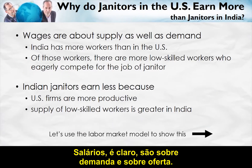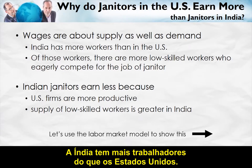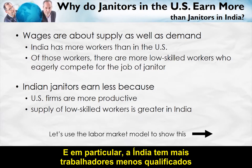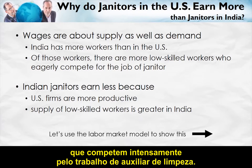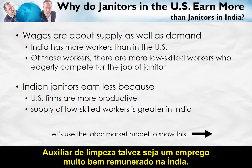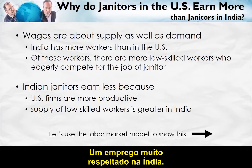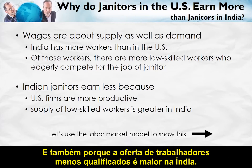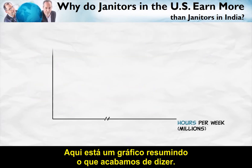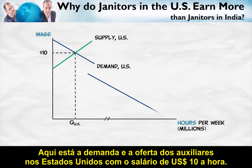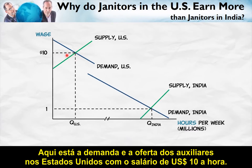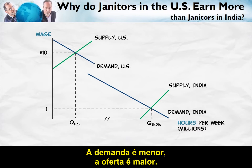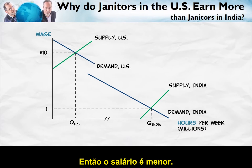Wages are about both demand and supply. India has more workers than the United States, and in particular, India has more low-skilled workers who eagerly compete for the job of janitor — a janitor could actually be a quite high-paying, well-respected job in India. So Indian janitors earn less because U.S. firms are more productive (demand for labor is higher) and because the supply of low-skilled workers is greater in India. Here's a graph summarizing what we just said: the demand and supply of janitors in the U.S. yields a wage of $10 an hour, while in India the demand is lower and the supply is higher, so the wage is lower.